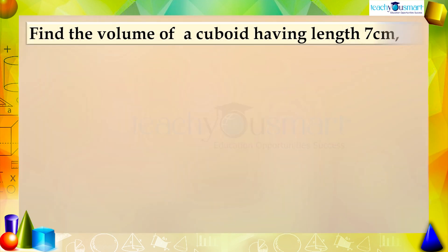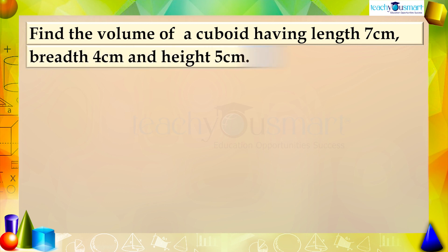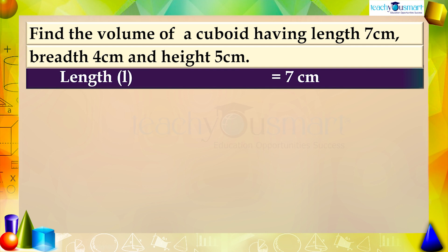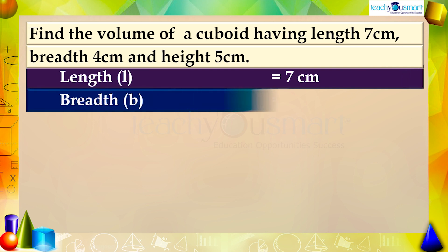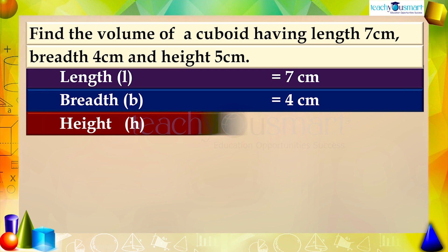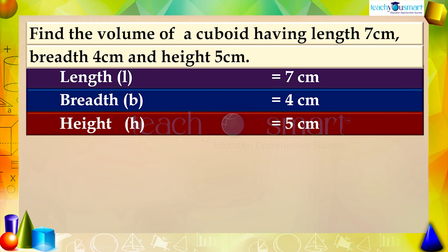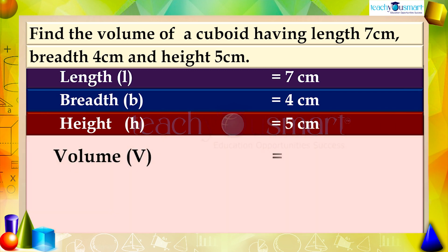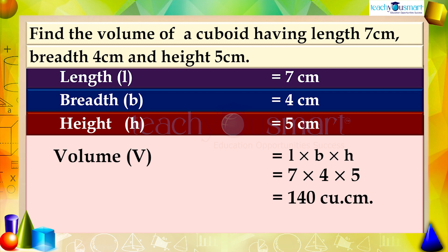Find the volume of a cuboid having a length of seven centimeters, a breadth of four centimeters, and a height of five centimeters. Length L equals seven centimeters, breadth B equals four centimeters, height H equals five centimeters. Then the volume V equals L multiplied by B multiplied by H, which equals seven multiplied by four multiplied by five, giving one hundred and forty cubic centimeters.